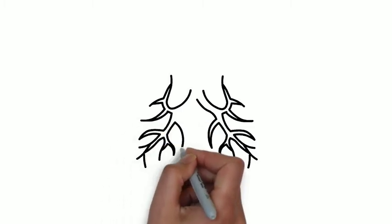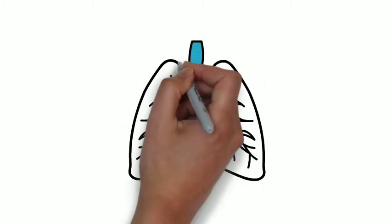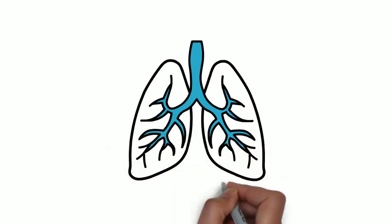So how exactly does asbestos damage the lungs? It can damage lungs in different ways. It can cause pleural plaques, pleural thickening, asbestosis, and cancers such as mesothelioma and lung cancer.